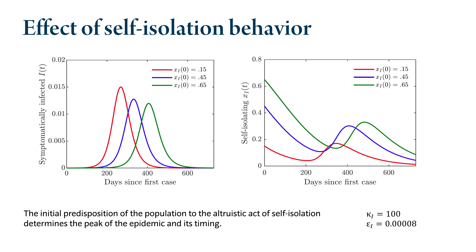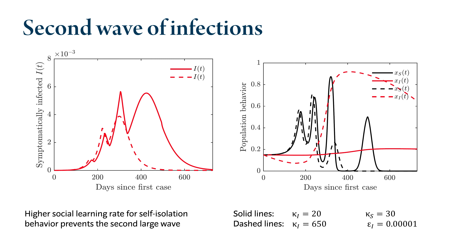The second illustration isolates the effect of the self-isolation behavior, assuming nobody supports workspace or school closures. The result is very straightforward: the more conscientious individuals we have in a society, the lower the peak of the pandemic and the later it occurs.